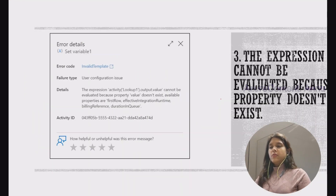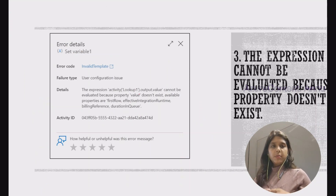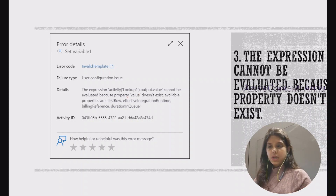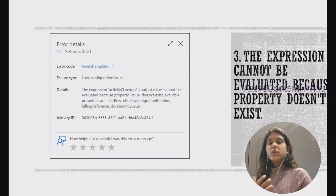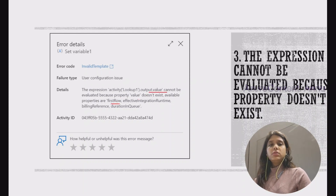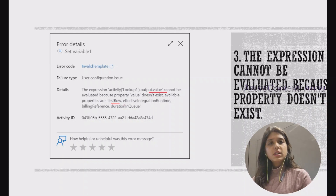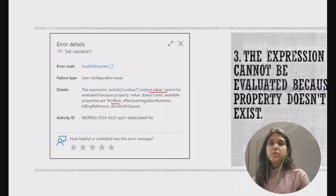For this error, we just need to check what properties are available in the previous activity that we are referring to in the subsequent activity, and use them correctly. If you're trying to refer to the value property of lookup, make sure the first row option is disabled, and use string interpolation to mitigate type mismatch issues. That's it for this video — I hope you found it helpful. Please hit the like button and subscribe to the channel. Thank you.